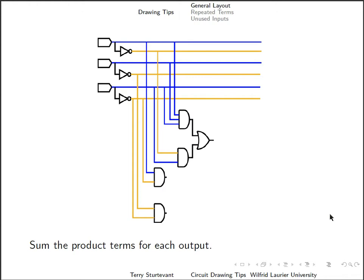Once you've got all of the product terms, then you can add up the ones as necessary for each of the outputs. You can then go ahead and label each of the outputs. Keep doing that until you're done.